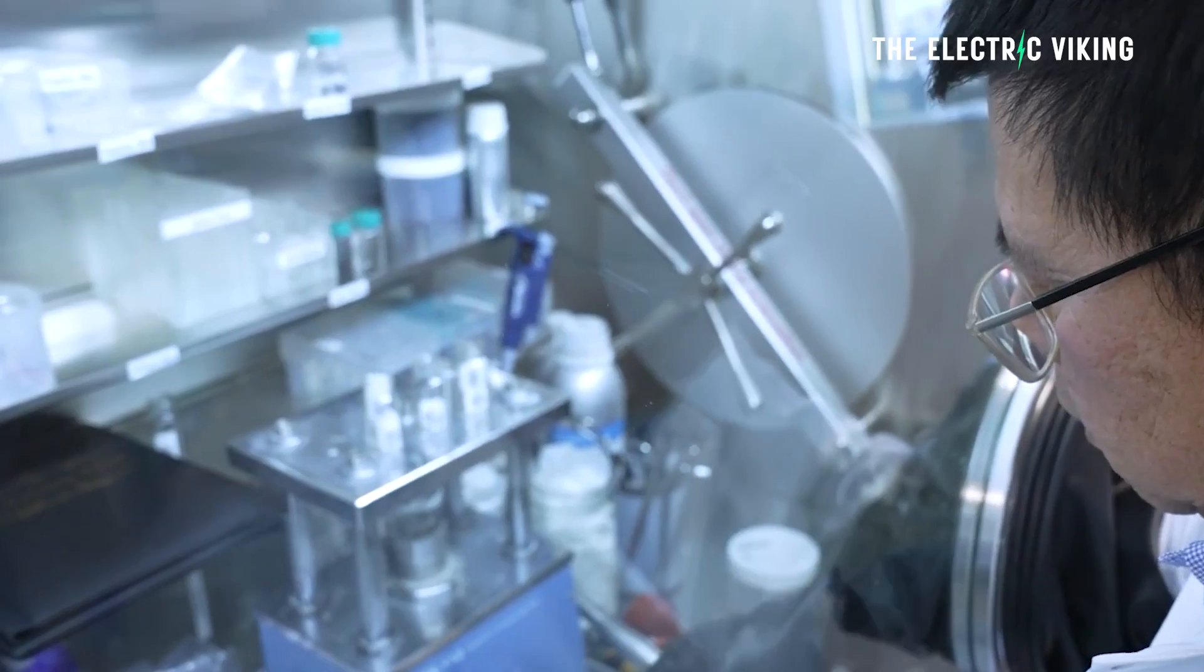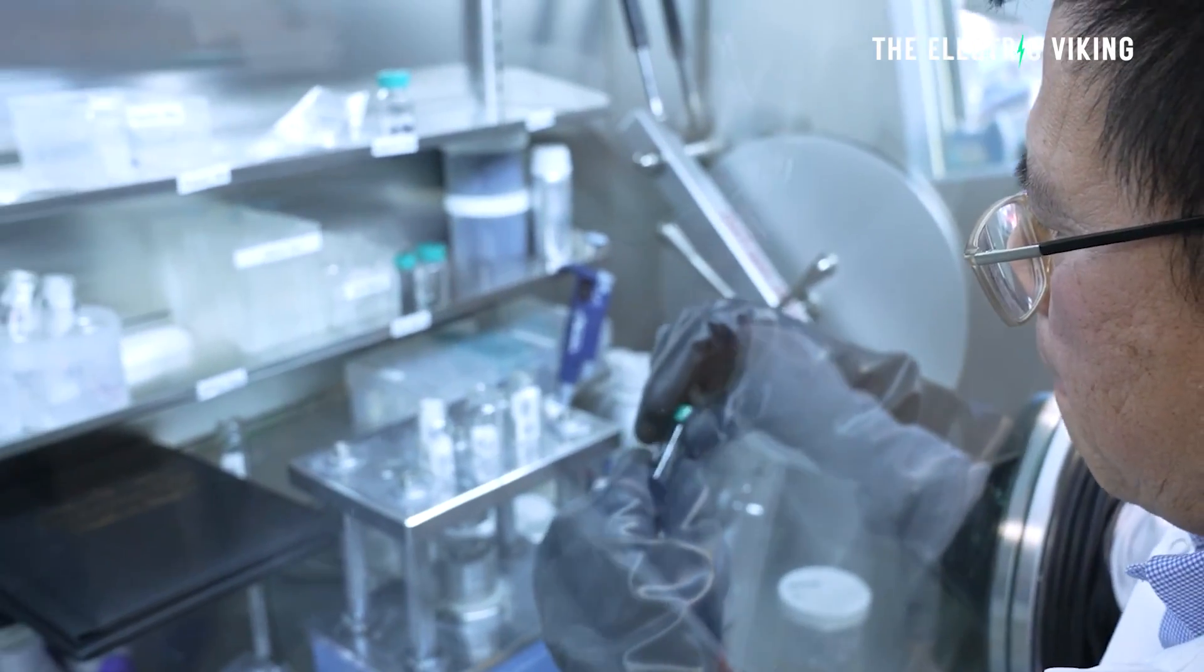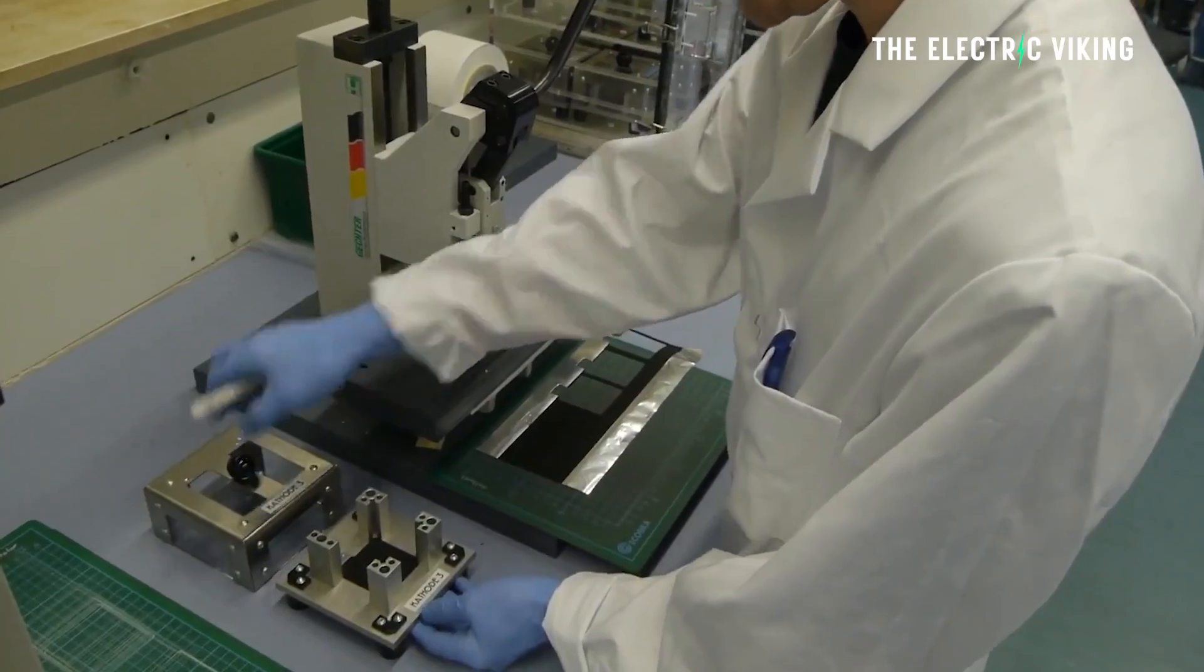Moreover, the electrodes produced through this method can charge at a much faster rate than those created using conventional methods. It's actually possible that we'll be able to see faster charging times from Tesla's latest version of their 4680 cells using these dry electrode techniques.